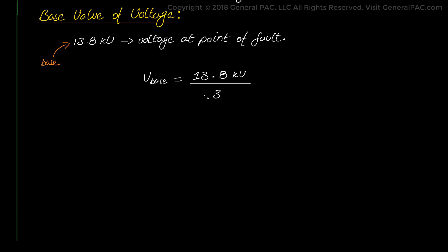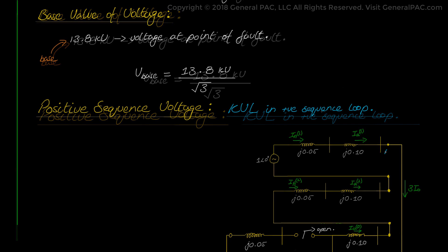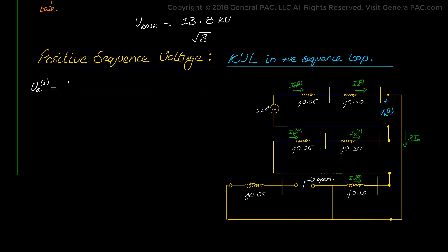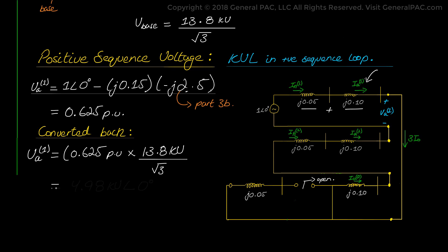To calculate the positive sequence voltage, we apply KVL in the positive sequence loop. The positive sequence voltage equals the voltage source minus the voltage drop due to the positive sequence impedance: 1∠0° minus J0.15 — the sum of the positive sequence generator and transformer impedance — multiplied by the per unit positive sequence current of negative J2.5 per unit, calculated in Part 3b. That gives us 0.625 per unit, which converts to 4.98 kV at 0 degrees.